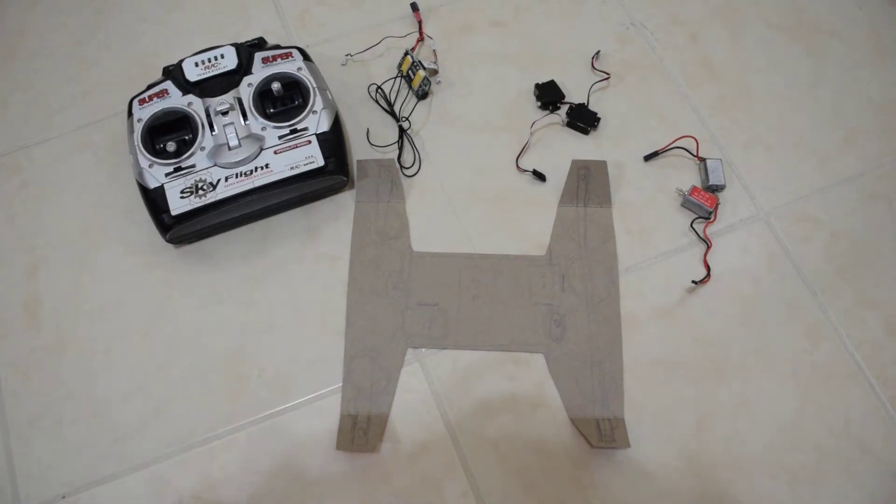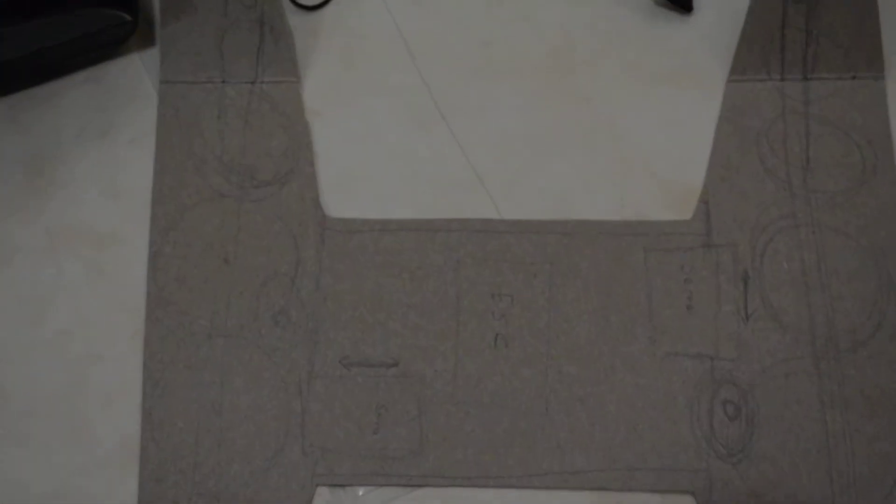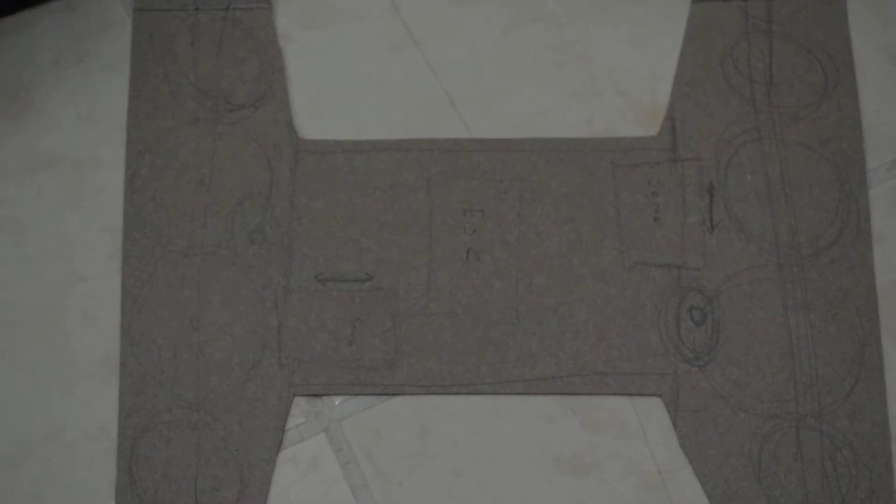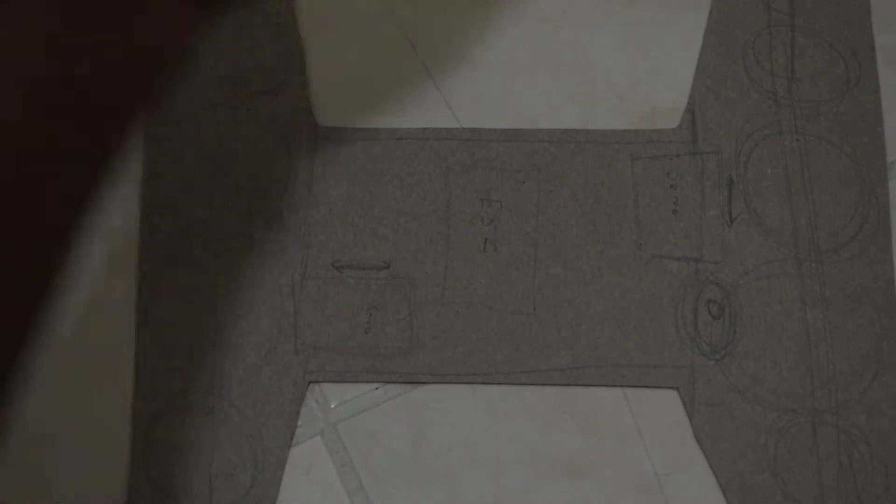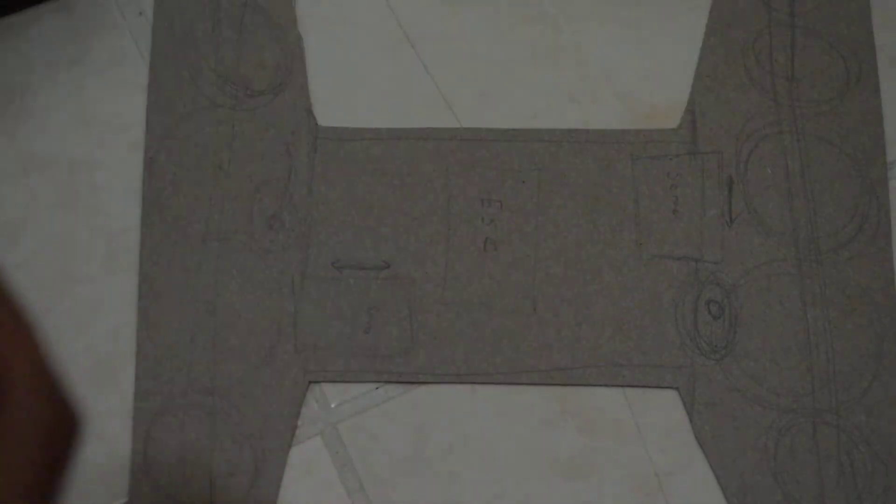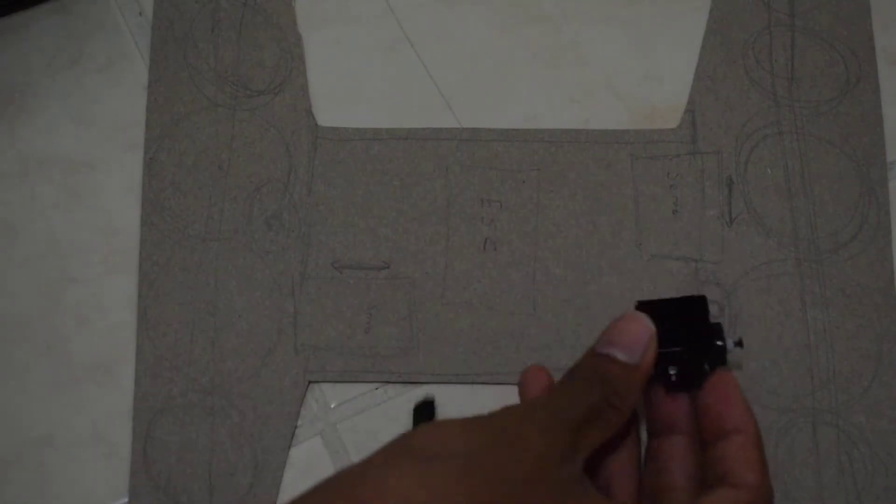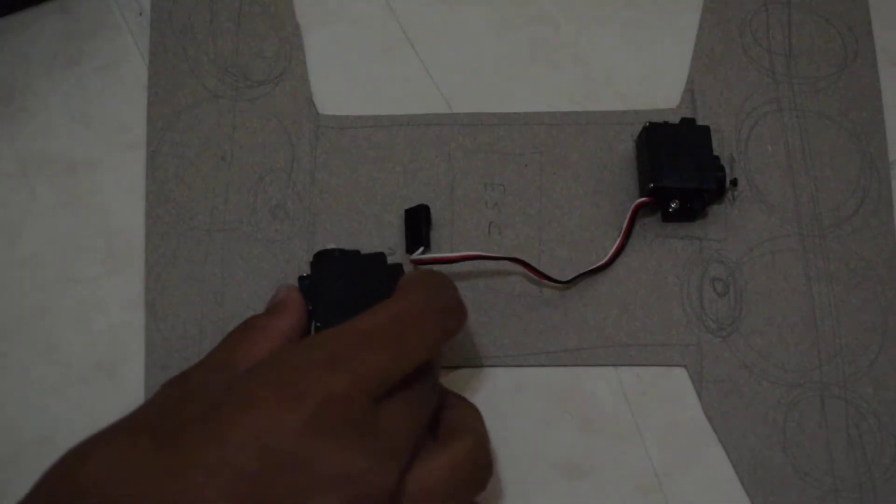You can sort of see here I have outlined how this is going to work here. So I'm going to have the ESC which is this thing here. I'm just going to place it in the middle so that's going to go there. I'm going to have the two servos. So one servo is going to go here and another servo is going to go here like that.